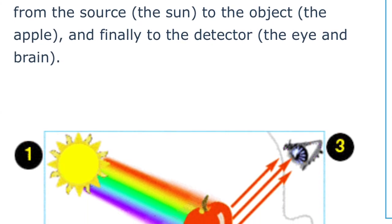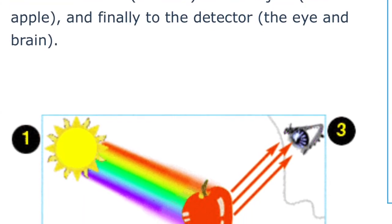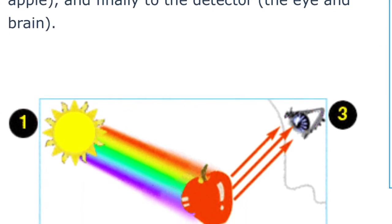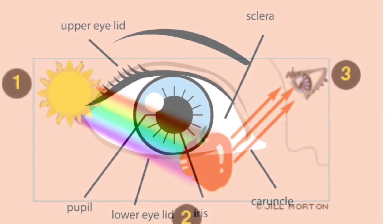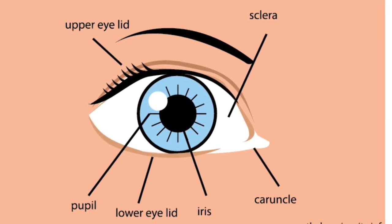When the sun shines on an object like an apple, the apple actually reflects red into our eye and our brain tells us that the apple is red. The rest of the colors are absorbed by the apple.